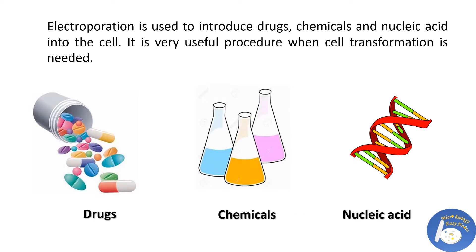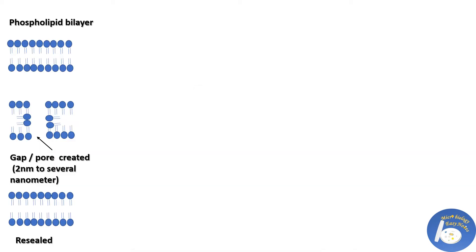Why is electroporation required? Electroporation is used to introduce drugs, chemicals, and nucleic acid into the cell. It is a very useful procedure when cell transformation is needed. Now, to understand how electroporation works, watch this video.